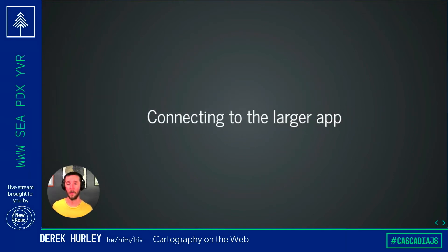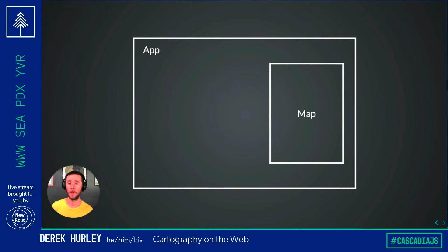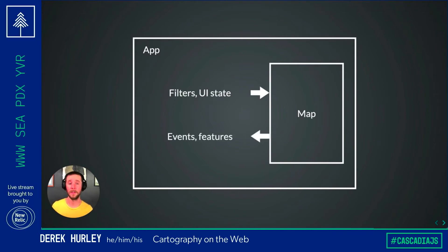Now that we know how maps work, how data gets into them, and how layers might stack, we need to think more deeply about how the map connects with the larger application. My mental model comes back to a bi-directional channel of communication. We need to send stuff into the map to visualize things correctly — whether it's current filter values or UI state saying hide that or show this. And as the map operates, we need to get stuff back out of it — whether it's specific features so we can display them elsewhere, extract statistics, or events saying I'm done loading, I had a network error, I'm still loading. That bi-directional interface between the larger application and the map becomes a very important place to invest some time.